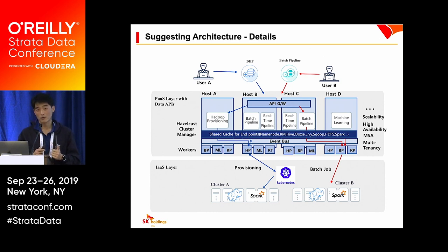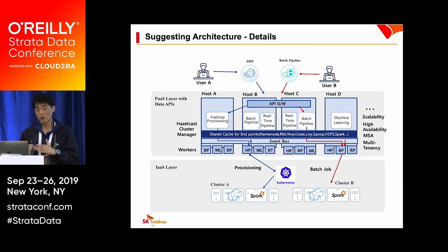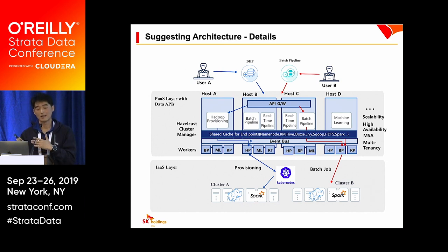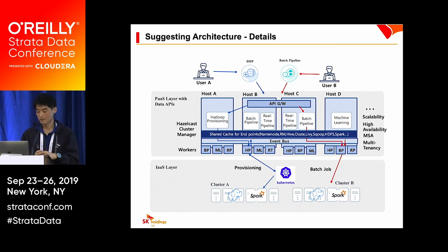User B can also create Hadoop cluster B the same way. Then User B sends an ETL job to the batch pipeline service. The request is passed to the batch pipeline BP worker, which looks up the shared cache to find the endpoint of the YARN server in cluster B, and submits the ETL job to that endpoint. By this way, our platform provides scalability, high availability, microservice architecture, and multi-tenancy.